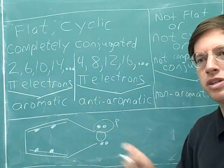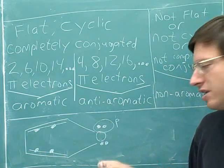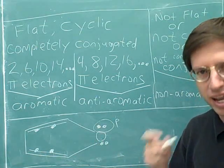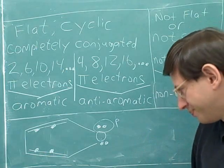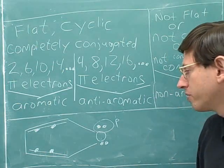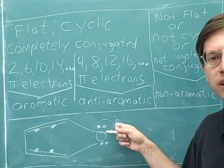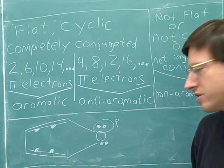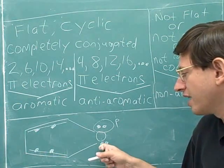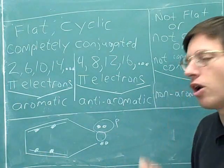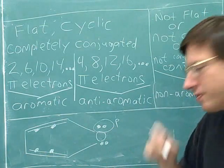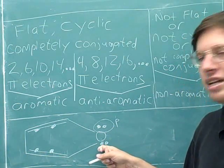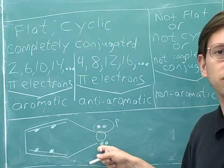Remember from the work that we did earlier — how many p orbitals does an sp2 hybridized atom have? Remember that every sp2 hybridized atom only has one p orbital left. The other three orbitals are sp2 orbitals. So this cannot be in a p orbital because this atom has already used up its p orbital. So what type of orbital are these in? These are in an sp2 orbital.